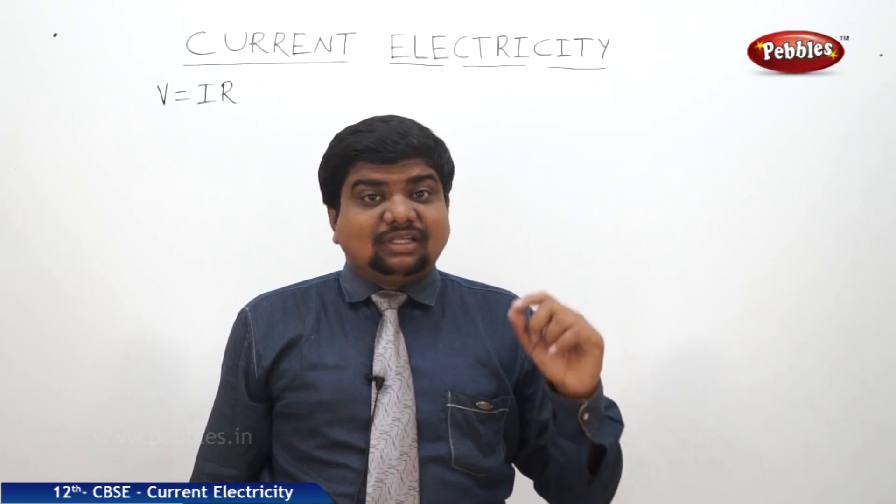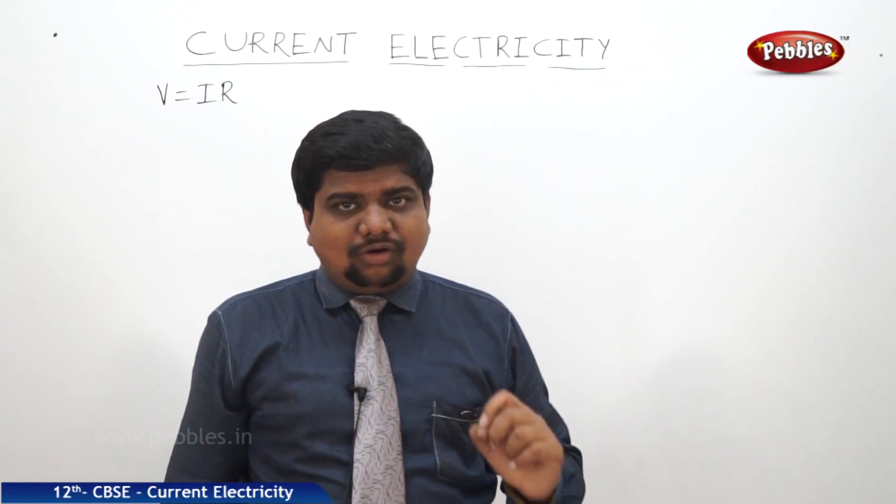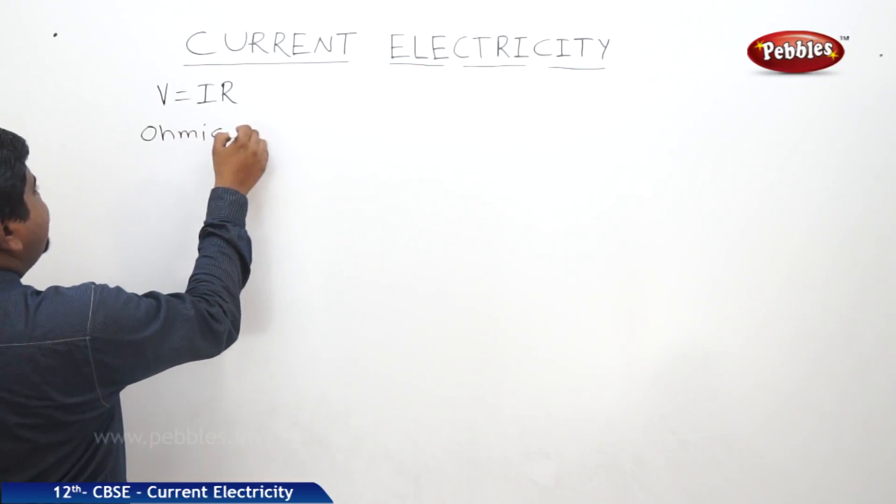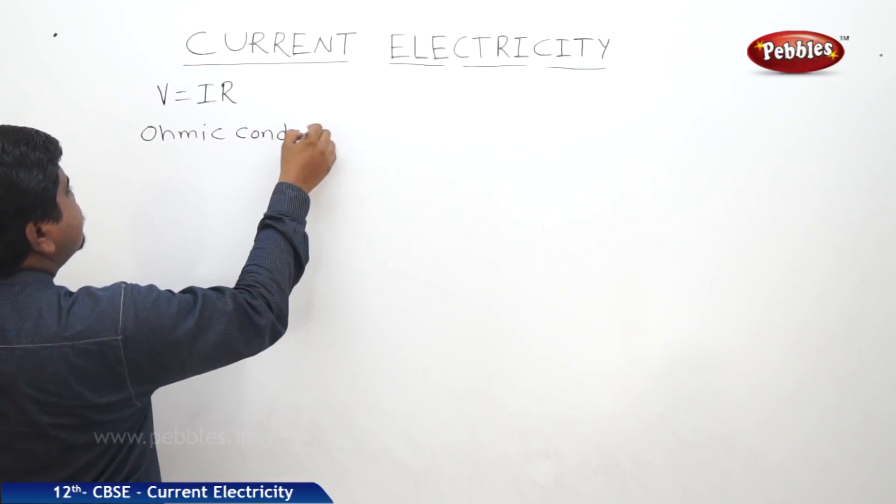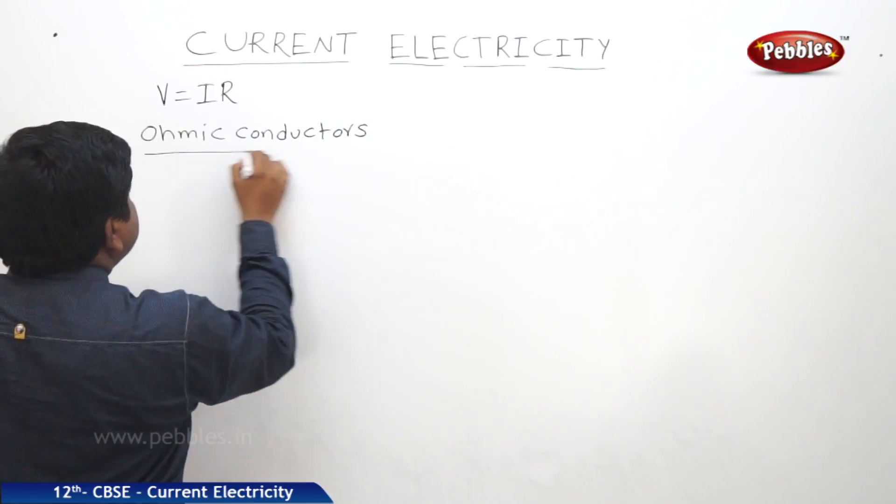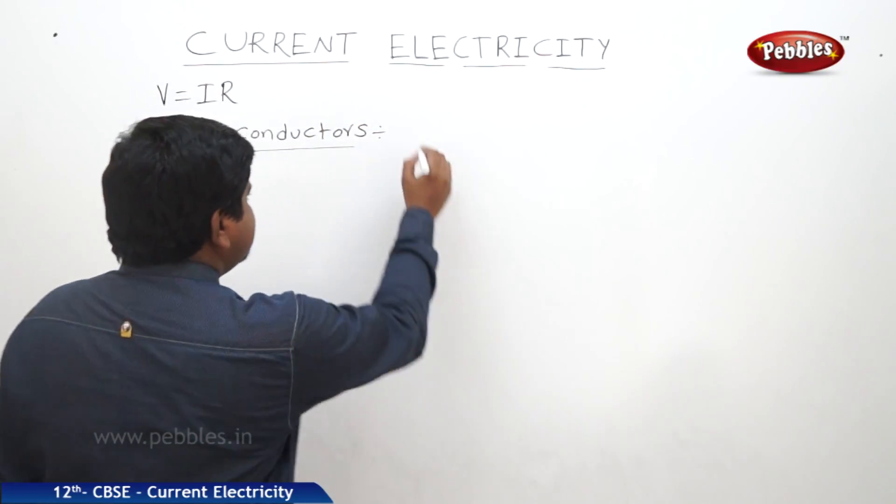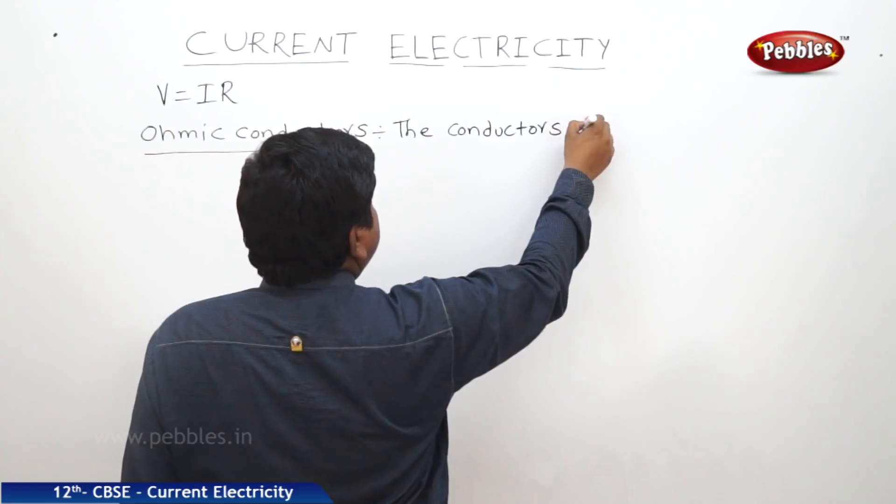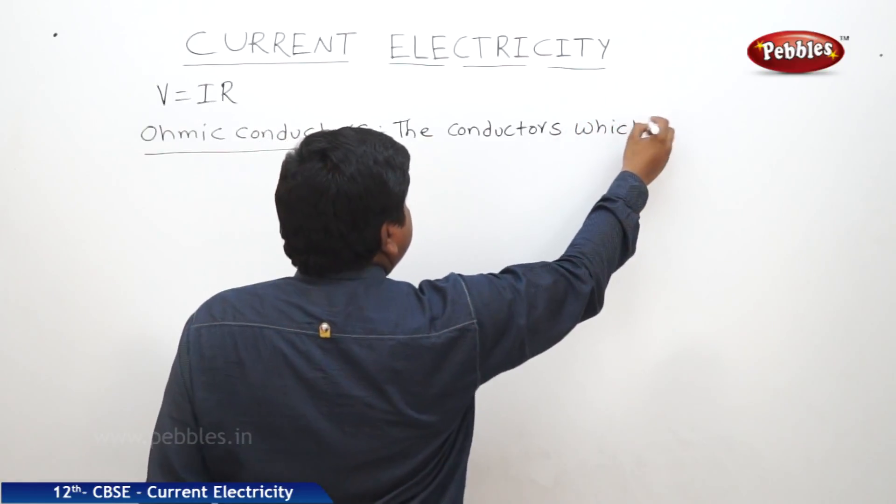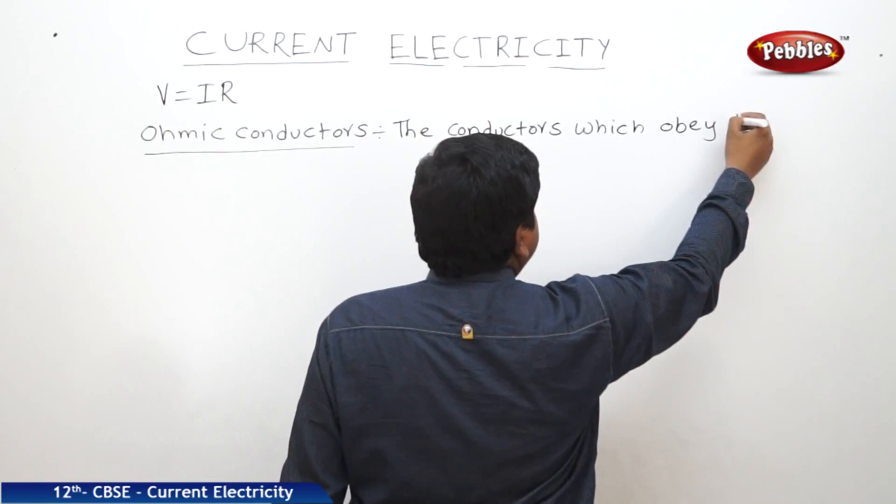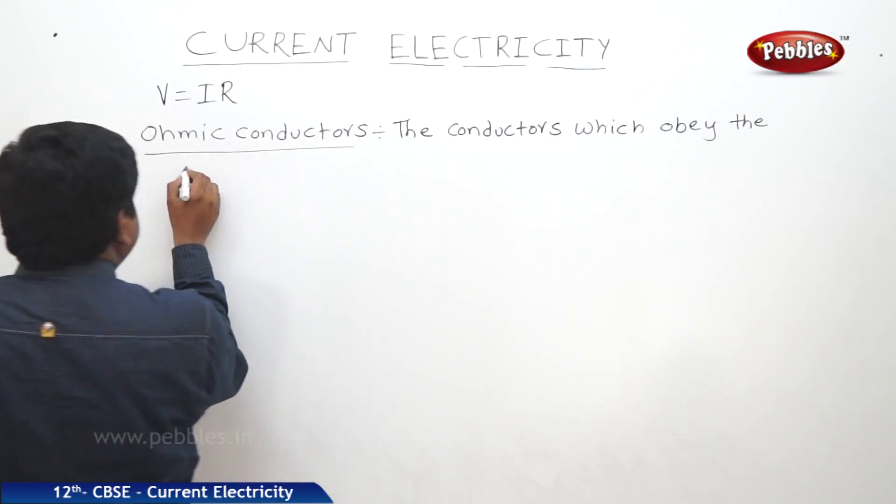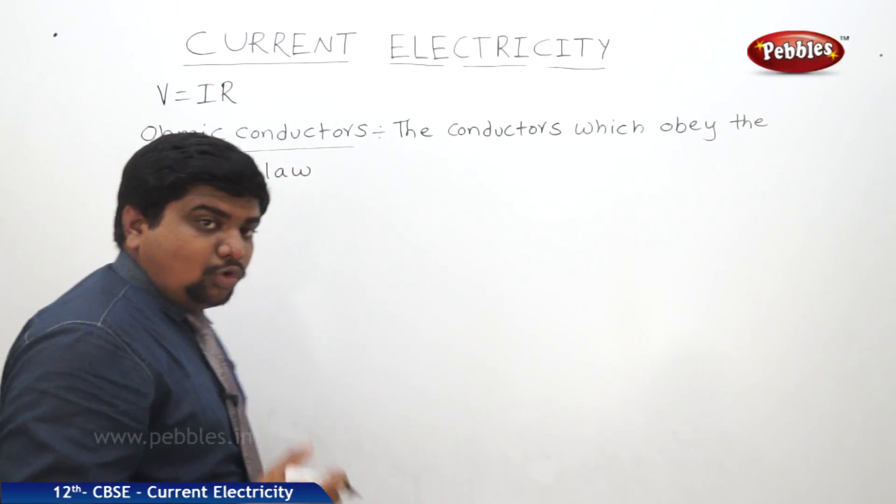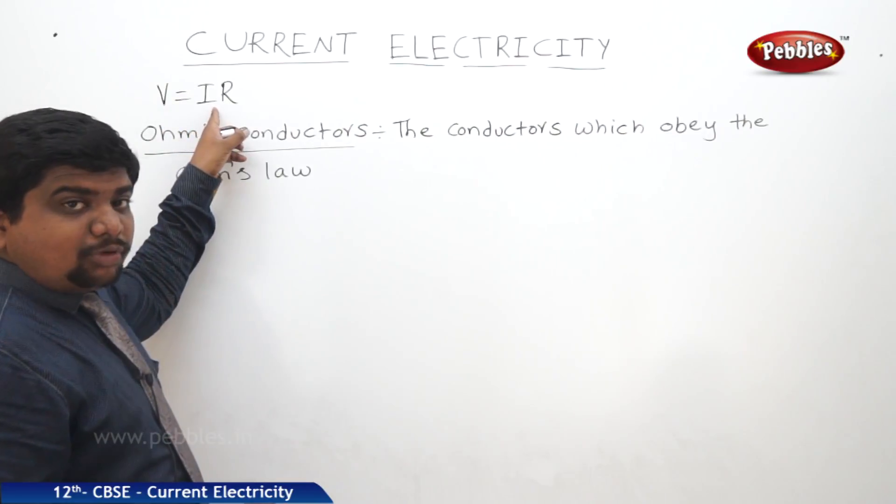The materials which obey are the conductors which obey the Ohm's law are called Ohmic conductors. Ohmic conductors. What is the meaning of Ohm's law? The conductors which obey the Ohm's law. Obeying means V always proportional to I.